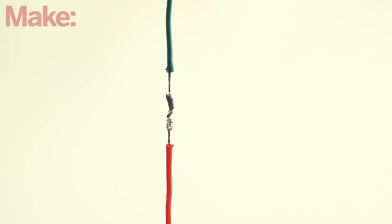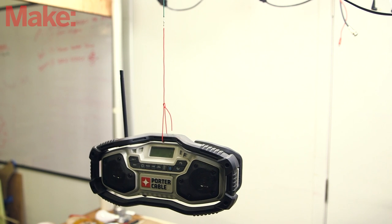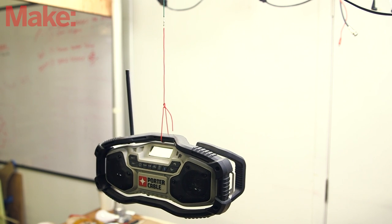The lineman splice was developed during the days of the telegraph for wires that need to be under tension. Properly made, the lineman splice should be stronger than any other part of the wire. Here's how to make one.